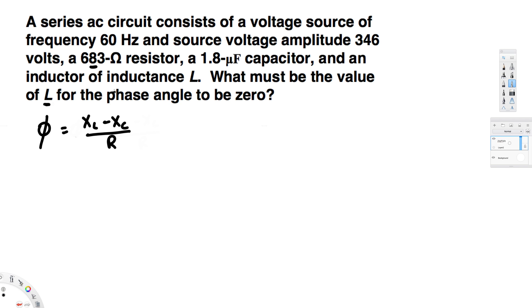So in order to have this to be zero, these two, XL and XC, must be equal. Then only when we subtract will we get zero. From that, we can form a relationship: XL should be equal to XC. That's the only possible way to make this phase angle zero.